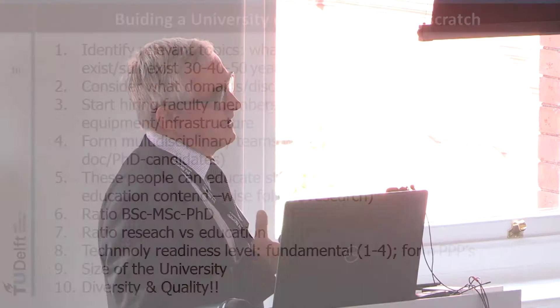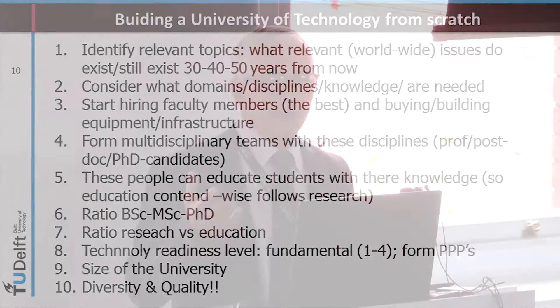If I would be able to build a university from scratch, the first question is: what is the university for? I'm talking about a technological university or a university of technology. The first thing I would do is ask myself: what is relevant 20, 30, 40, maybe 50 years down the road? I'm sure we have not solved the medical problems in this world. I'm sure the food problems or the climate problems will still persist 30 years down the line. These are examples, but there are many more where you can say these are questions worthwhile working on.